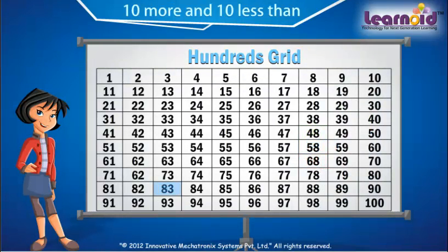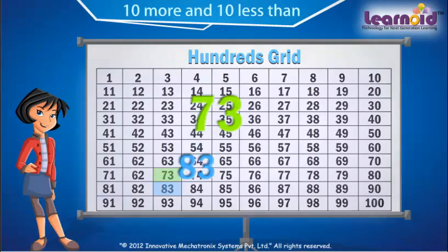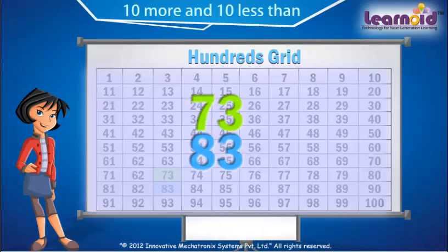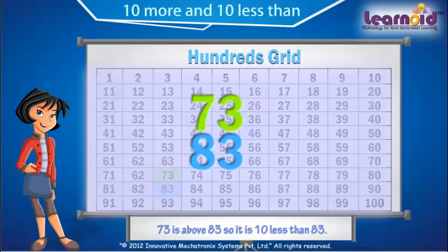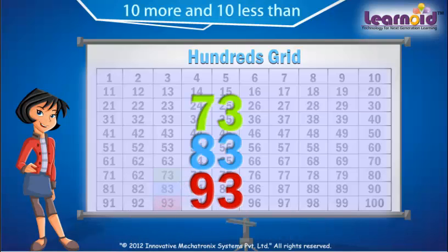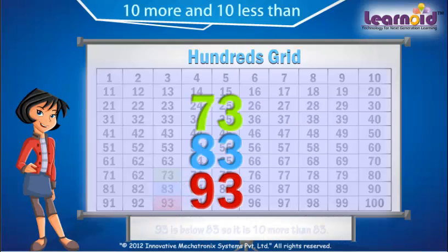Find 10 more and 10 less than 83. 73 is above 83, so it is 10 less than 83. 93 is below 83, so it is 10 more than 83.